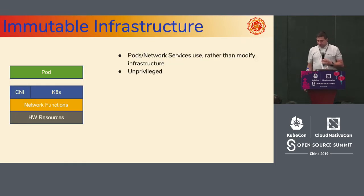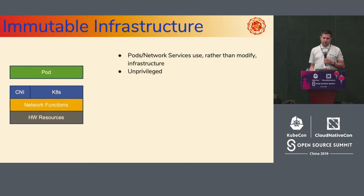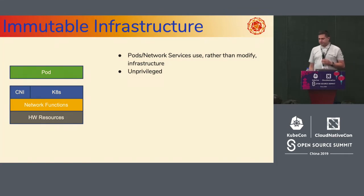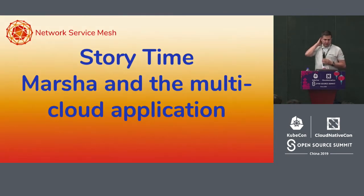From the immutable infrastructure point of view, your pods run at a high level of abstraction. You can't really change anything particular about the networking functions, which are abstracted through the Kubernetes and CNI APIs. Your pods really cannot request any specific networking capabilities from the infrastructure — you can't change it easily. So that's a partial check here.